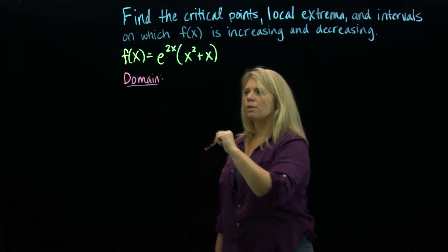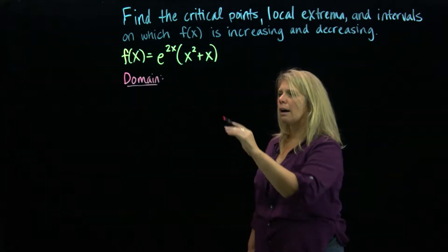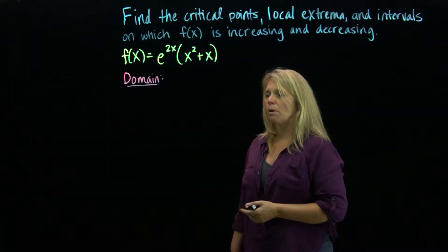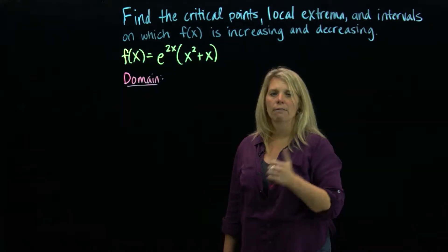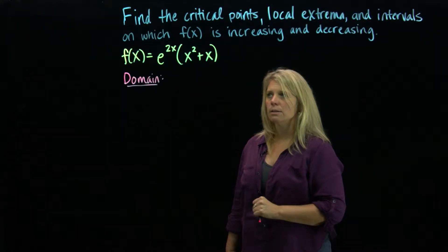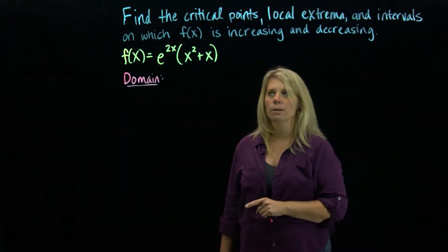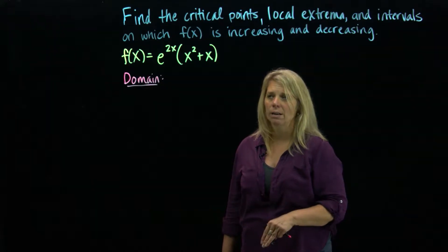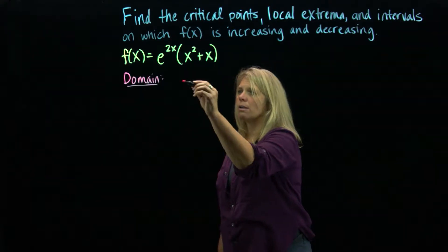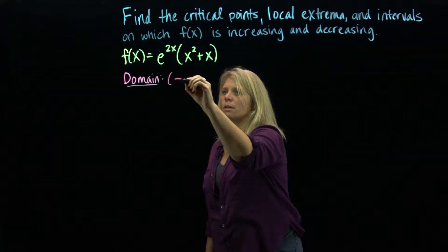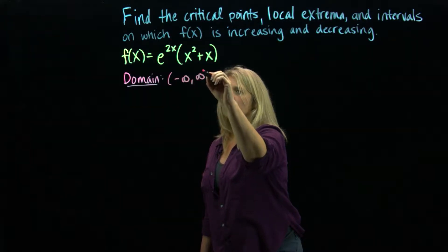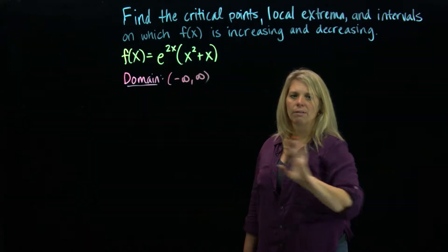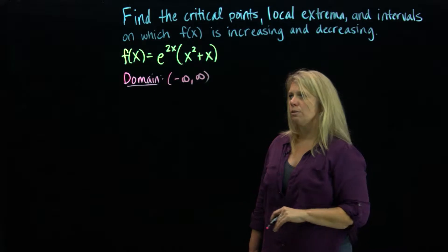Looking at domain and thinking about the usual domain restrictions: I don't have any denominators, I don't have any radicals with an even index, I don't have any logarithms, and I don't have any inverse trig functions. So there are no restrictions on this domain, and I should expect that this graph is going to go from negative infinity to infinity.